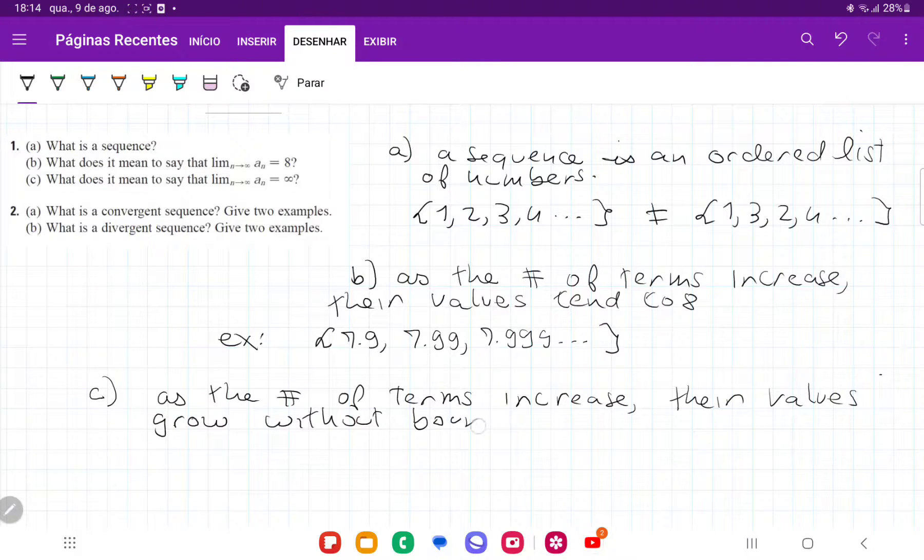So it just means that they are increasing without tending to a specific place. So an example here would be the sequence 1, 2, 3, 4, and etc. We can see here that it just keeps increasing every term that we add, and it never gets closer to any number. It just grows infinitely.